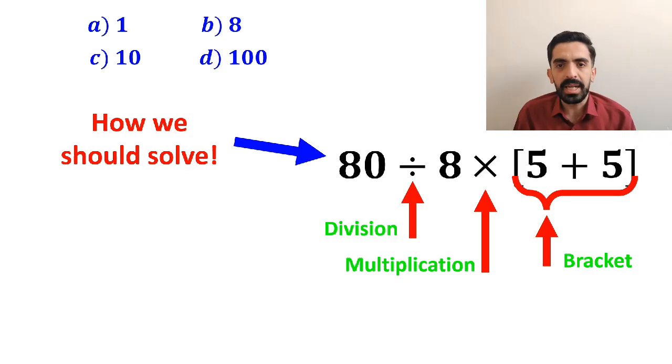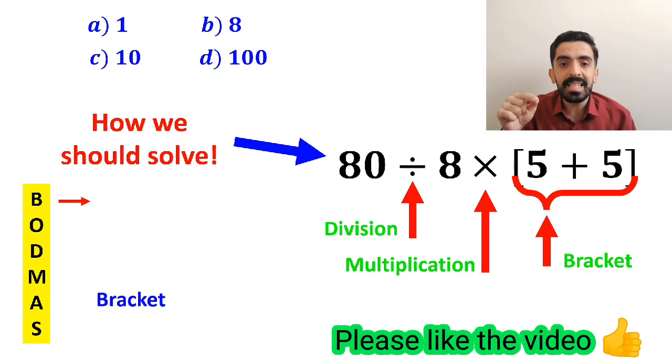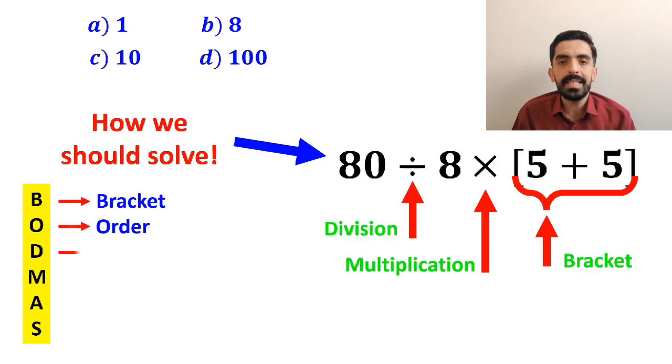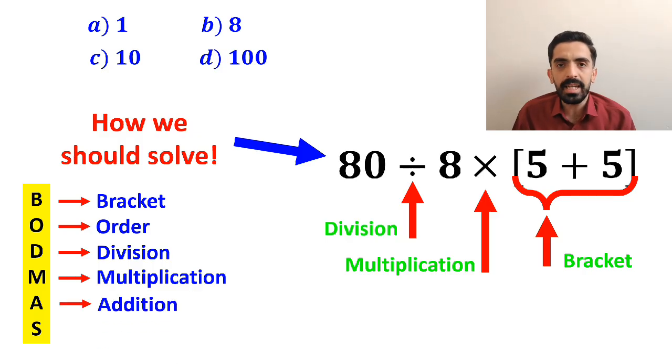To solve this expression, we need to use the BODMAS rule. In this rule, B stands for bracket, O stands for order, D stands for division, M stands for multiplication, A stands for addition, and S stands for subtraction.